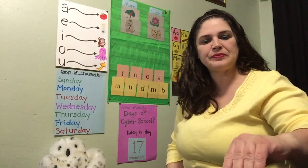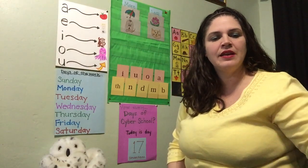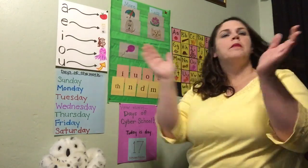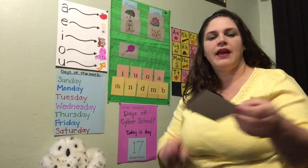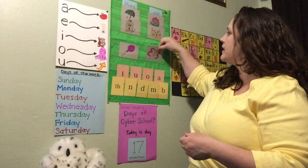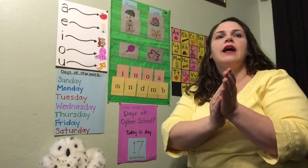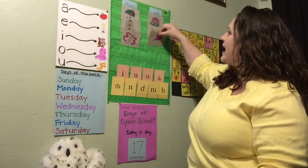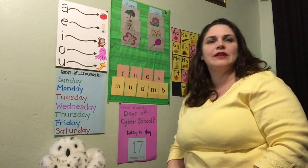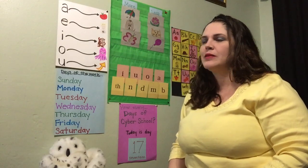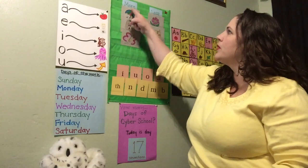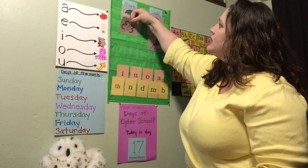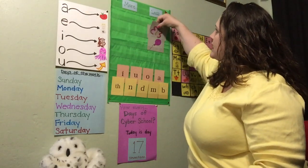Let's look at our next picture card. Balloon. Balloon — two syllables. And butterfly. Butterfly — three syllables. Butterfly has more, balloon has less syllables. Nice job clapping out the syllables and listening to hear which one had more and which one had less syllables.